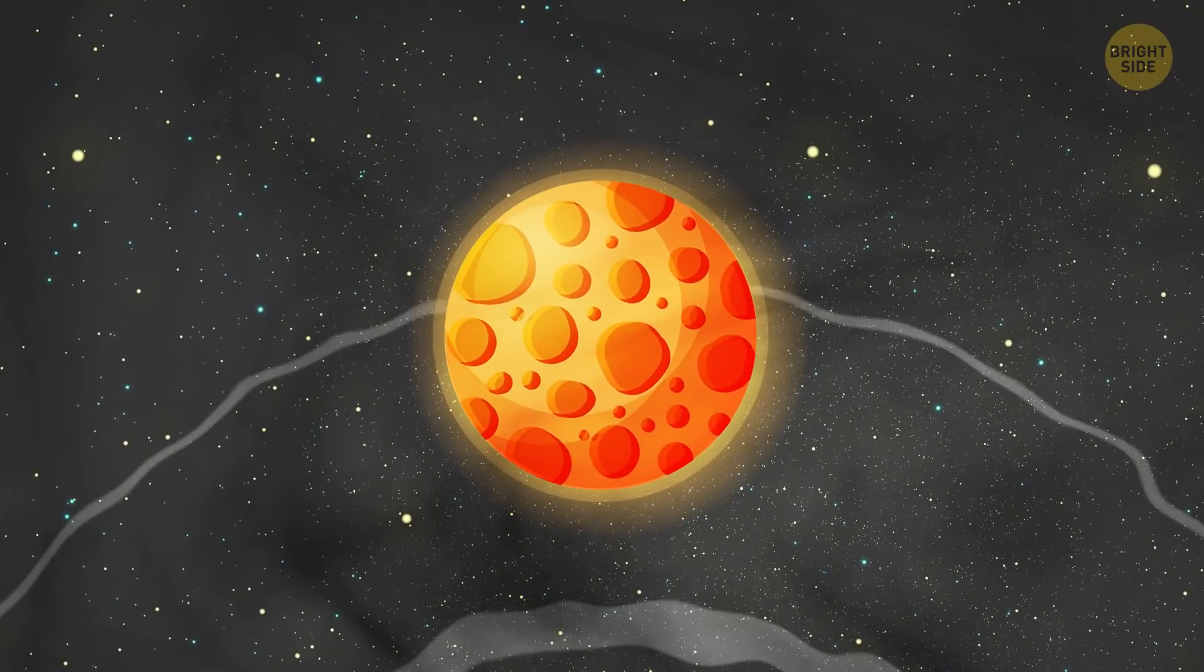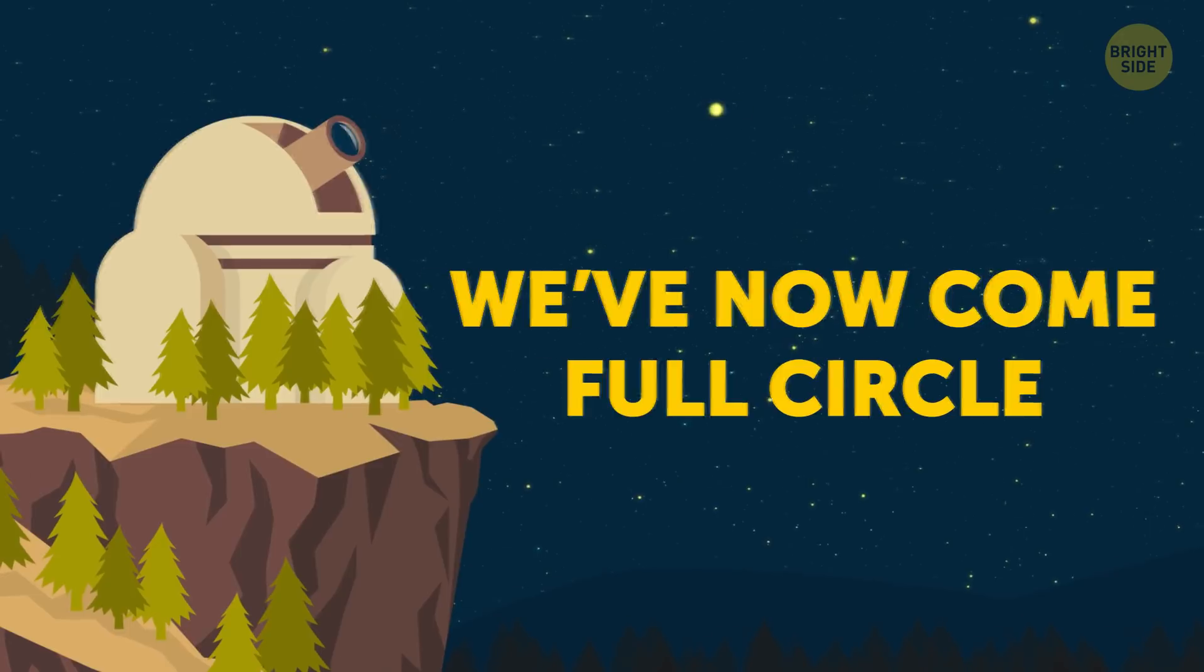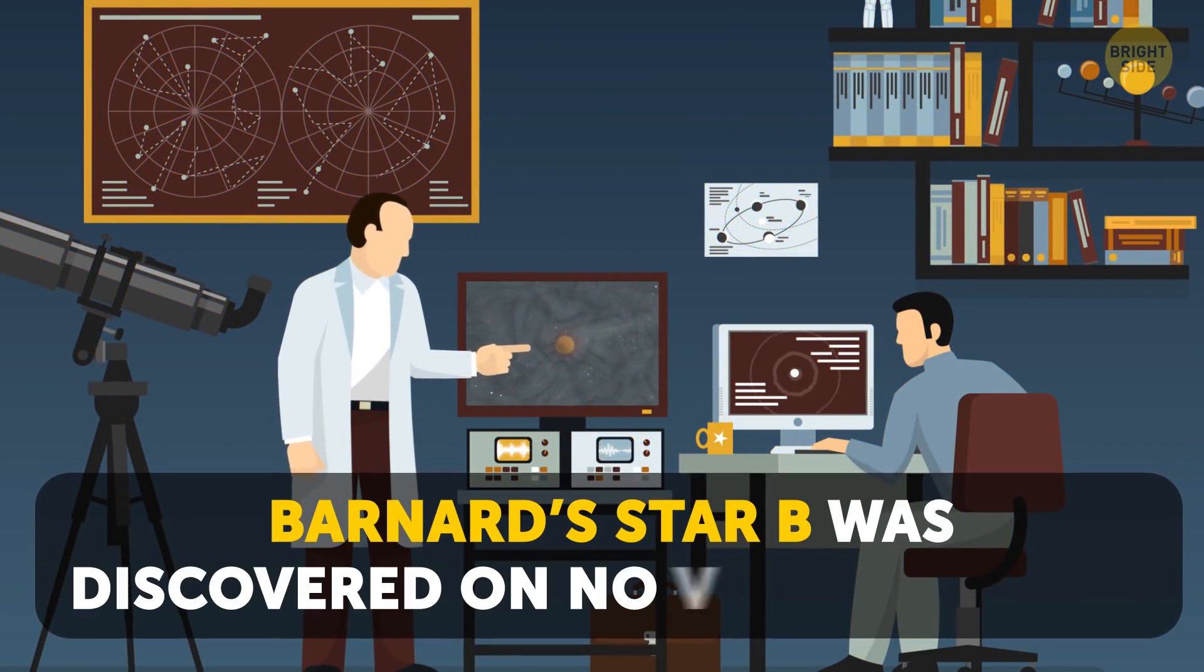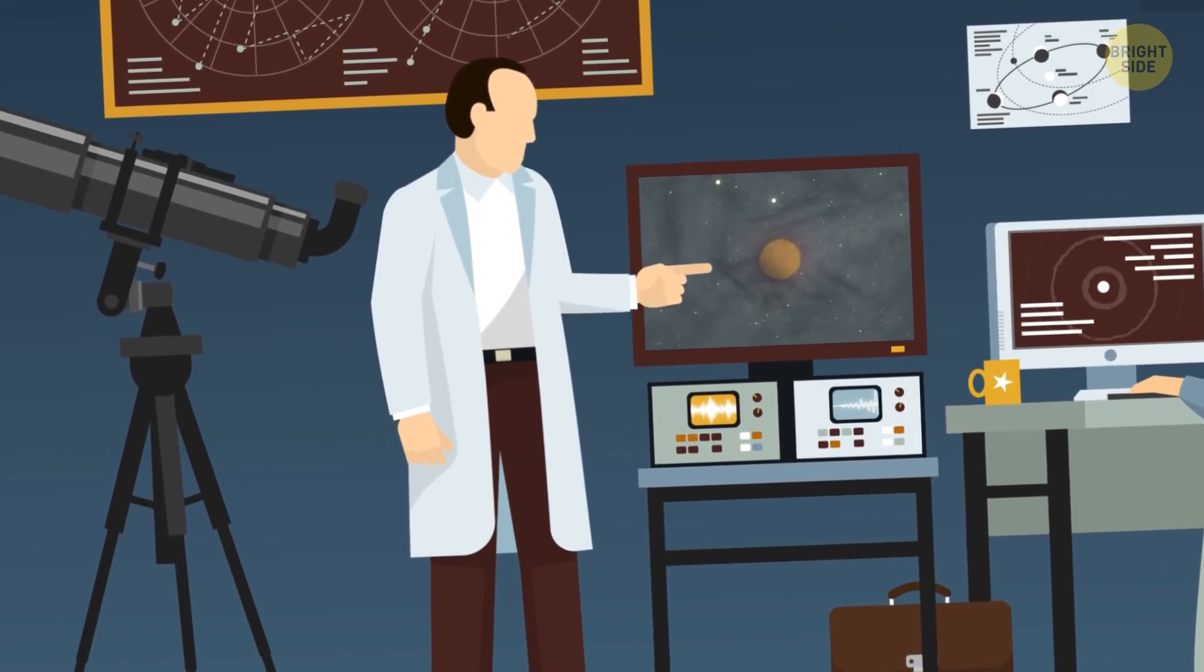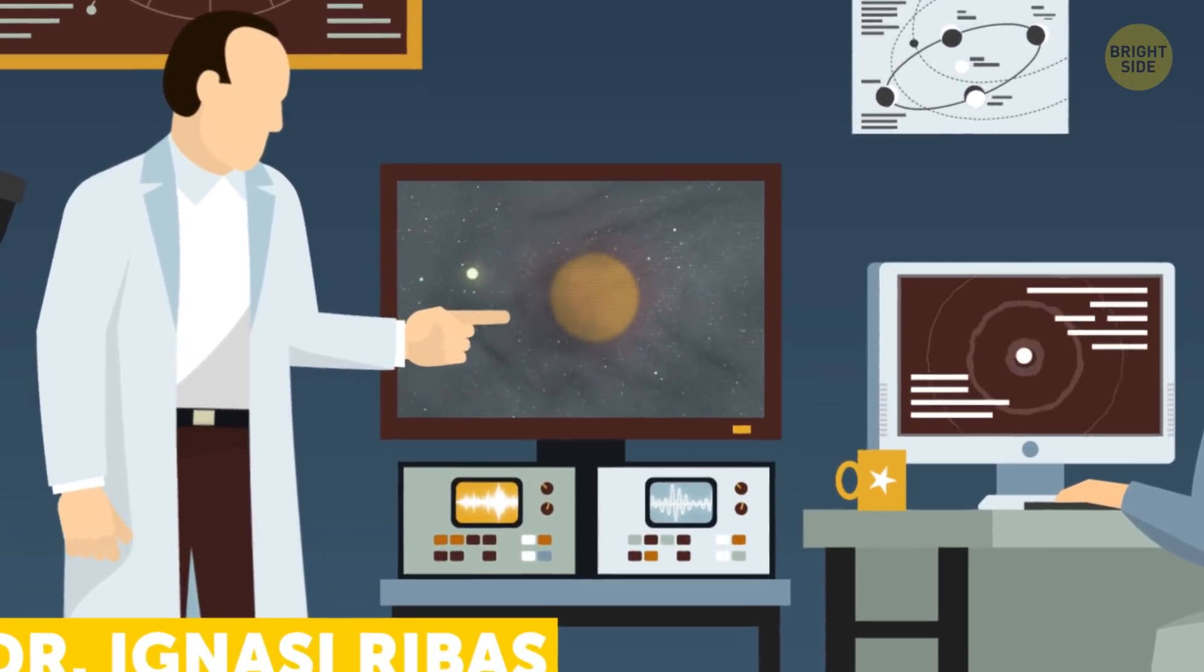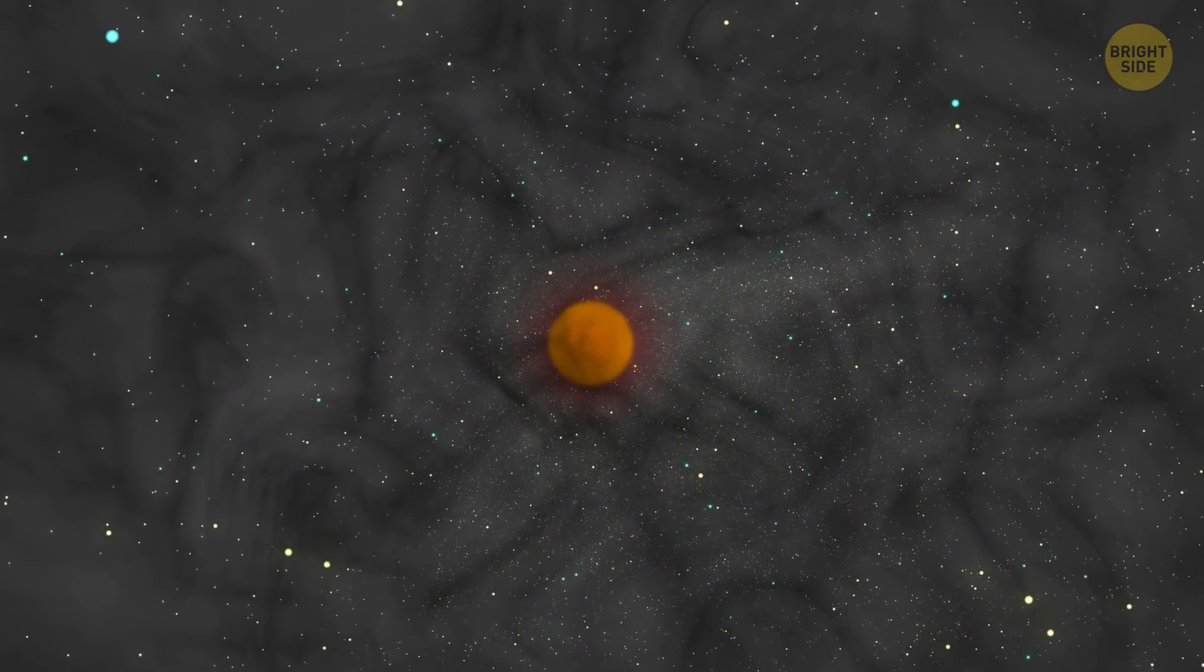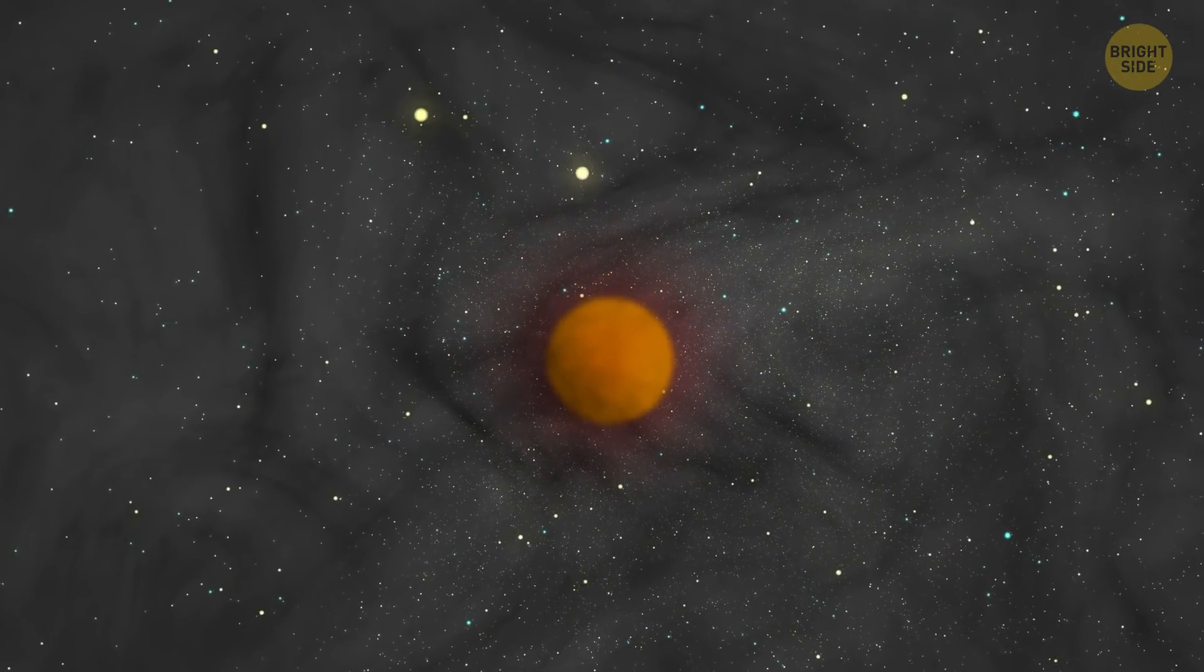And we've now come full circle. Barnard Star B was finally discovered on November 14th, 2018. An international team of astronomers led by Dr. Ignacy Ribas from the Institute of Space Studies of Catalonia started their research twenty years ago when they observed Barnard Star doing some other weird stuff besides wobbling.